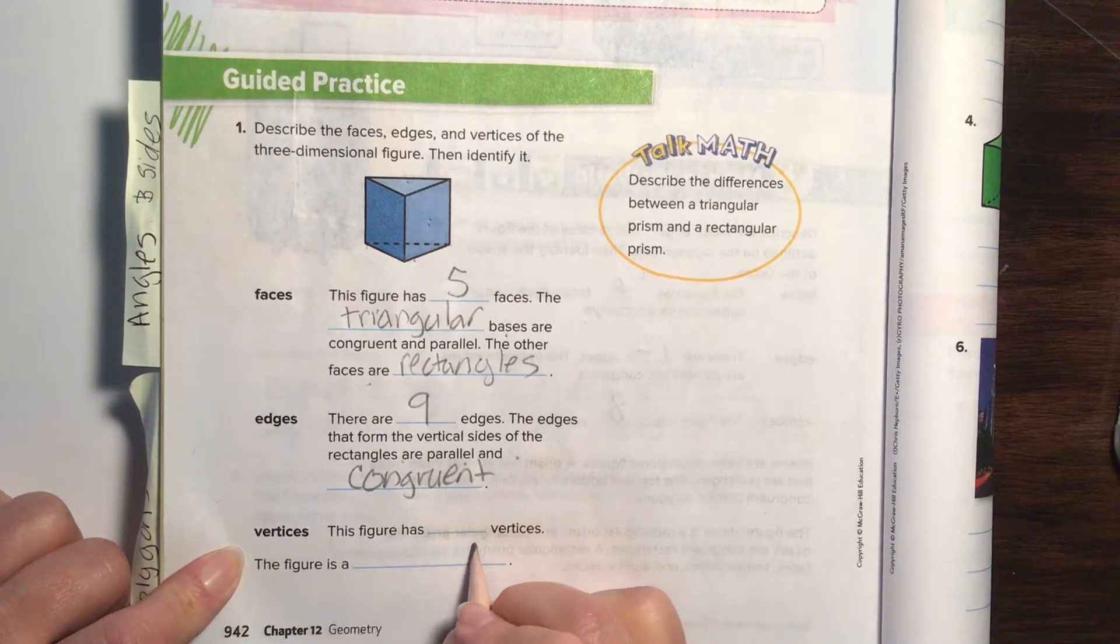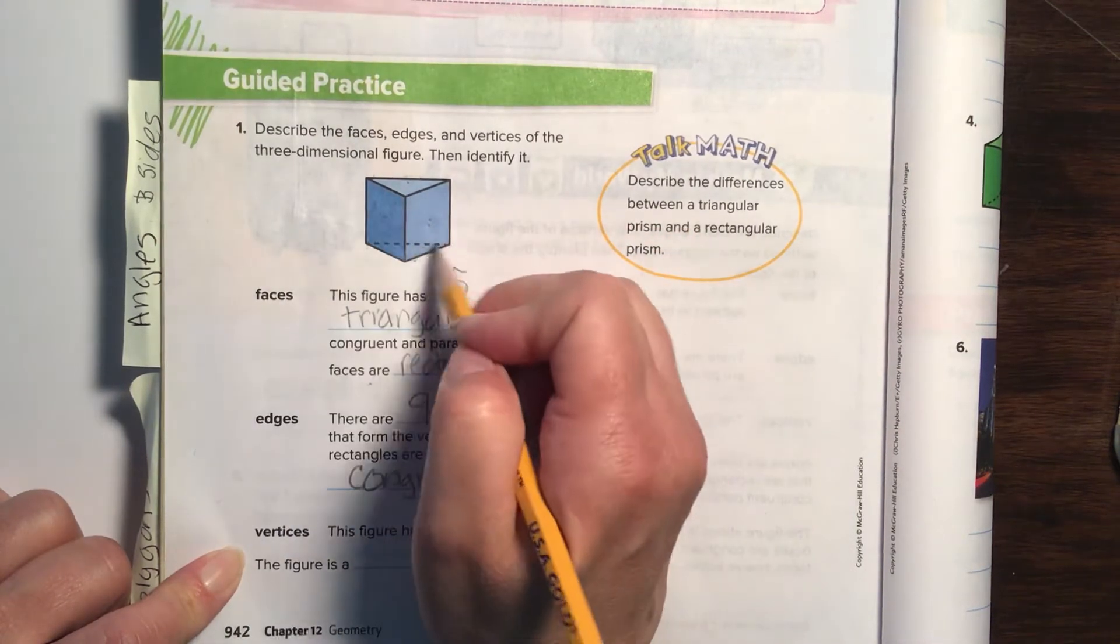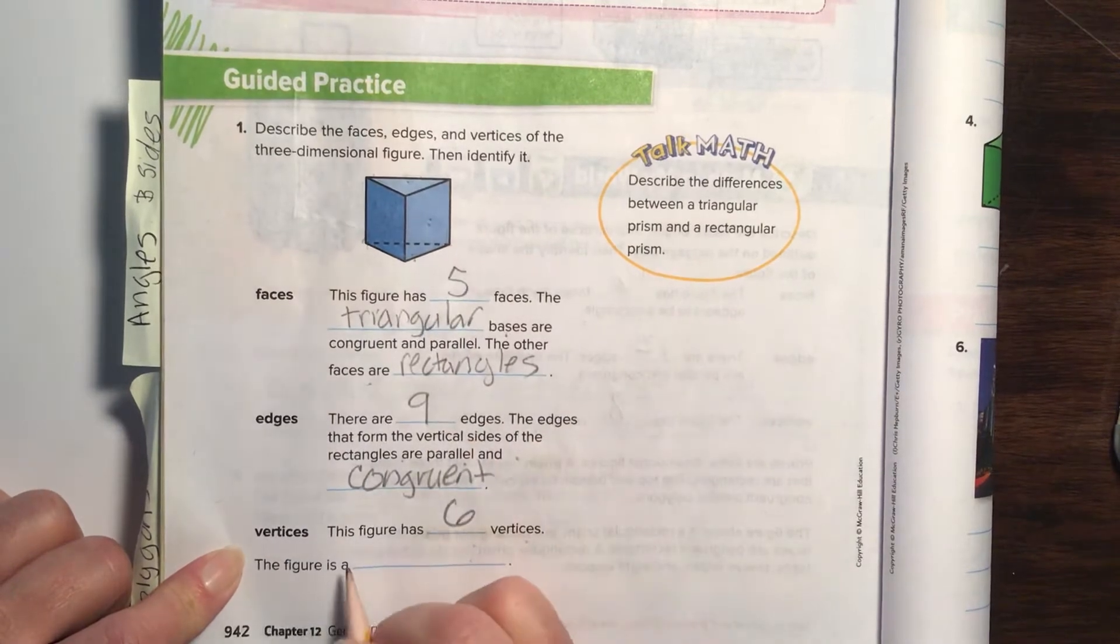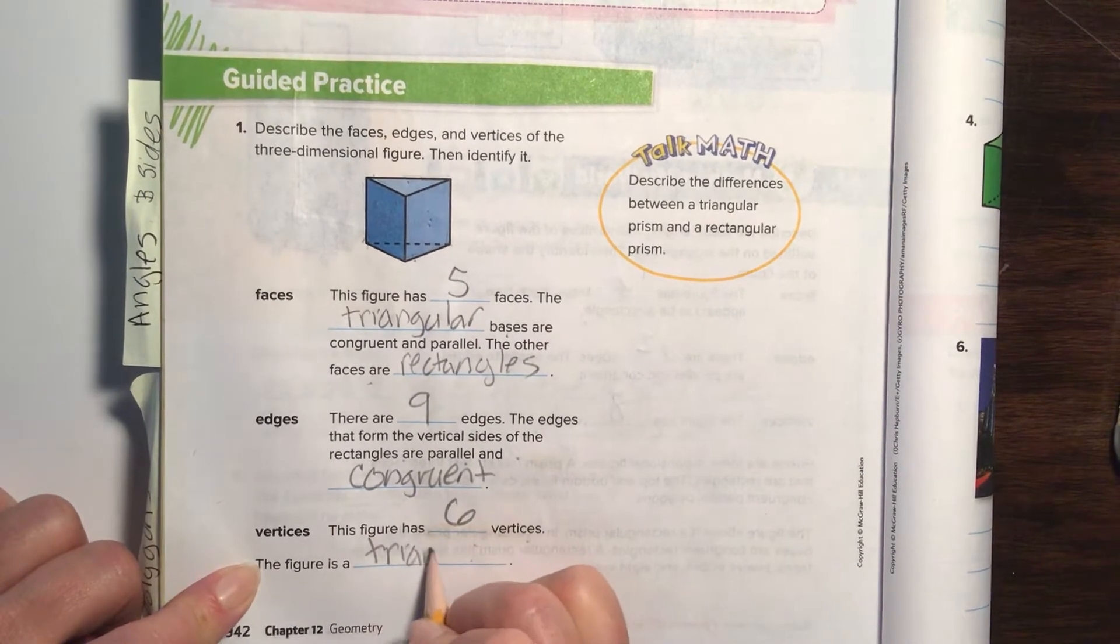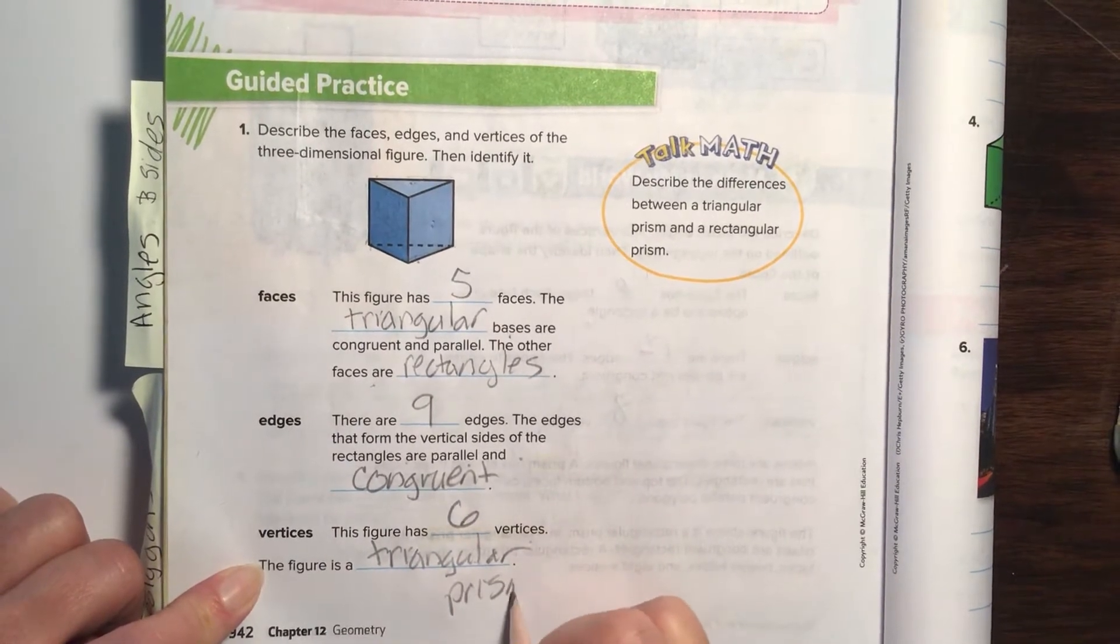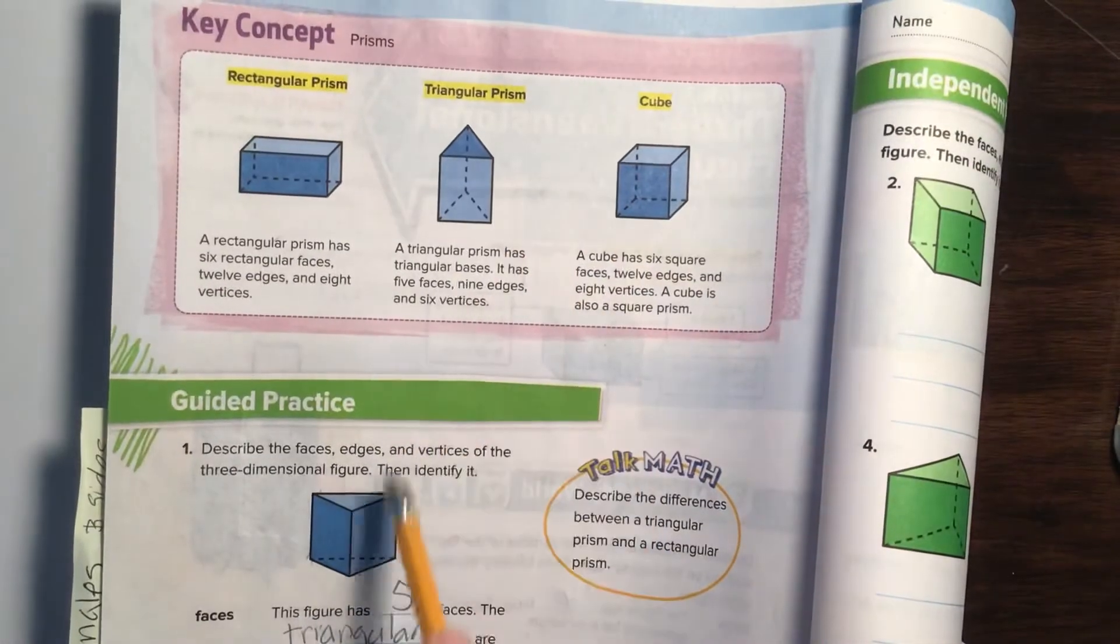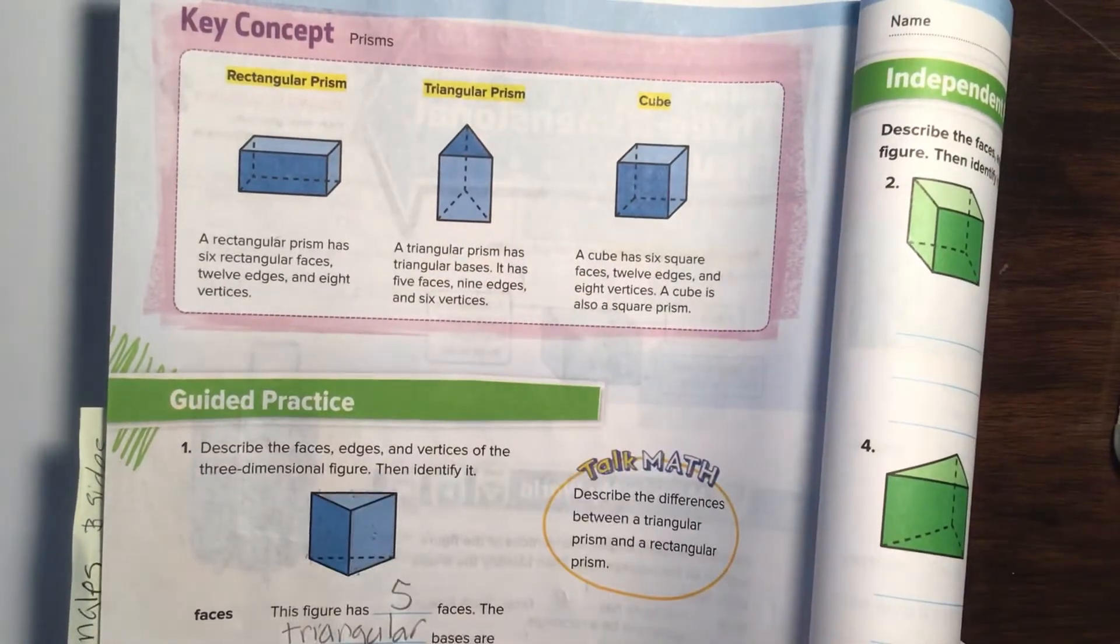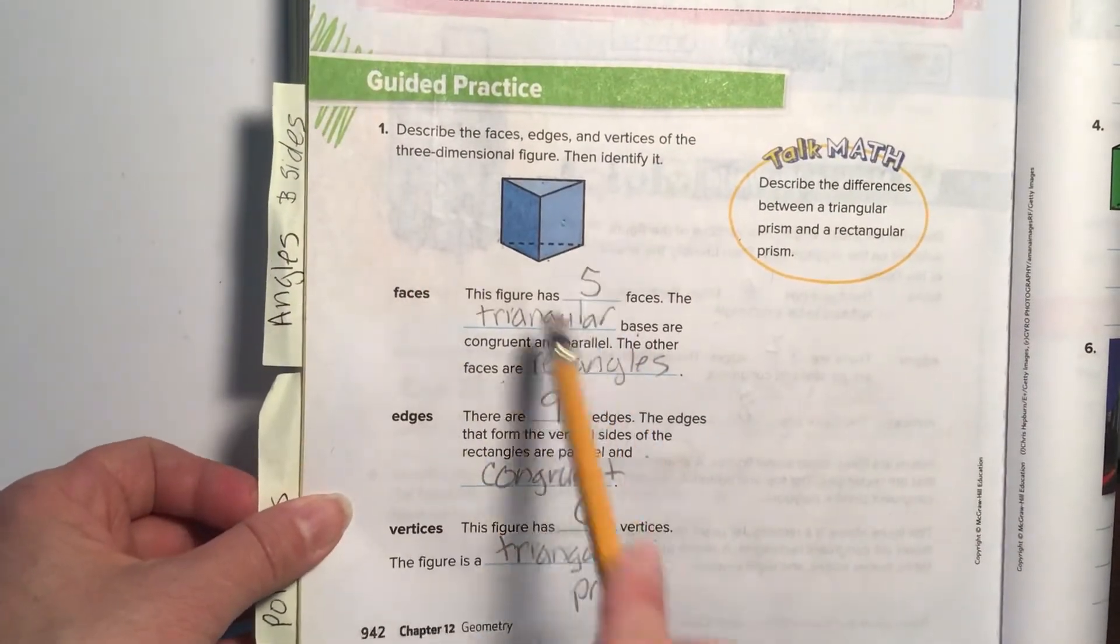Vertices. The figure has how many vertices or corners? Let's count: one, two, three, four, five, six. The figure is a triangular prism. That shape matches that shape. And we just labeled it by labeling the faces, edges, and vertices by counting and labeling them. That's what this whole lesson is going to be about.